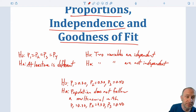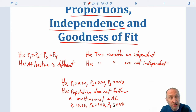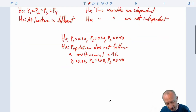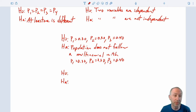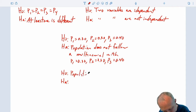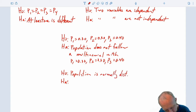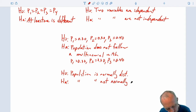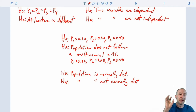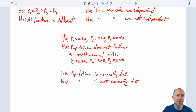The other goodness of fit test will look at the normal distribution. The null hypothesis is that the population is normally distributed, and the alternative is that the population is not normally distributed. We will define within the null and alternative hypotheses a very specific distribution — identifying a specific population mean and population standard deviation.